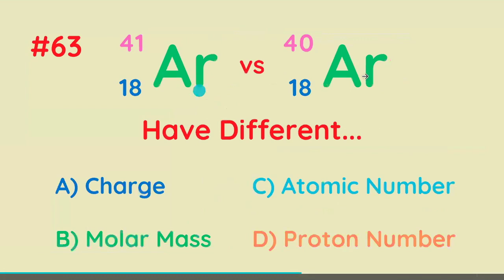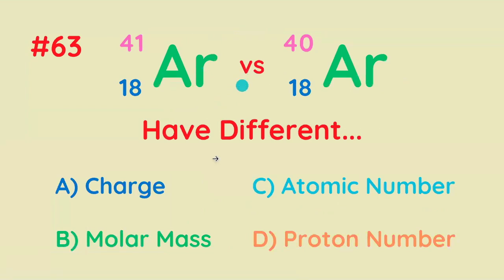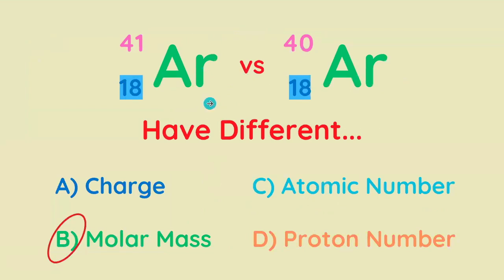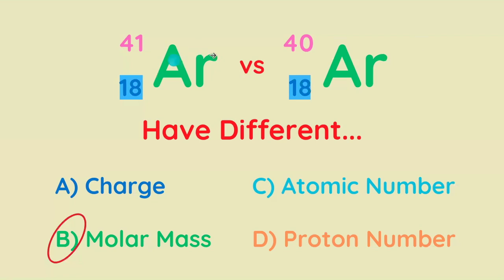What is the difference between this isotope and this isotope — what are they different in? Charge, molar mass, atomic number, or proton number? The correct answer is molar mass, because they have different mass numbers. They have the same atomic number and thus proton number, and the charge is not indicated, so it's zero for each.